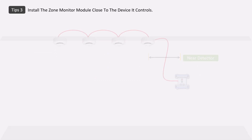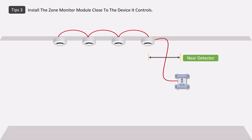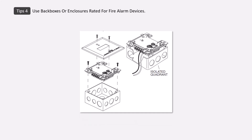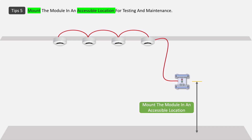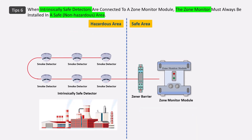Fourth tip: always install the zone monitor module with or near the devices — a greater distance can cause voltage drop which affects performance. Fifth: install the zone monitor module in an ABS box or fire-rated enclosure only. Sixth: install the zone monitor module at a location where maintenance and testing can be done easily. Seventh: when there is a hazardous area where an IS detector is installed, the zone monitor should always be installed in a safe, non-hazardous area.